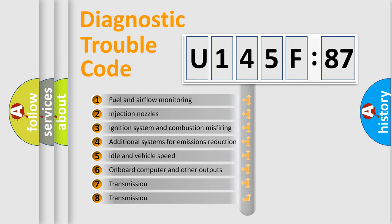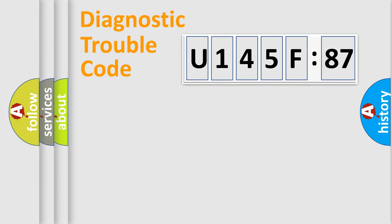The third character specifies a subset of errors. The distribution shown is valid only for the standardized DTC code. Only the last two characters define the specific fault of the group.